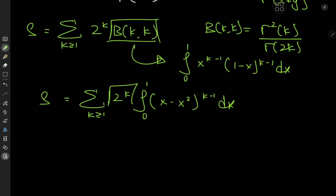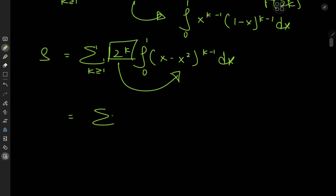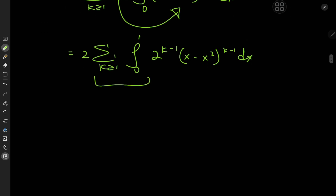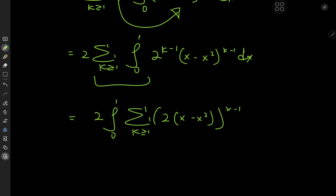So S equals the sum over the positive integers k of 2 to the k times the integral from 0 to 1, where x and 1 minus x both have the same exponent k minus 1. So I could just multiply out the terms and write this as x minus x squared, all to the k minus 1, dx. Because the 2 to the k term is independent of x, I can slip it inside the integration operator. That gives me the sum over k of the integral from 0 to 1 of 2 to the k minus 1 times x minus x squared also to the k minus 1 dx.